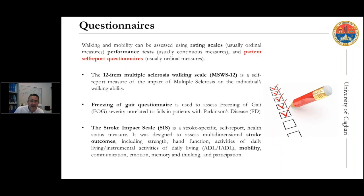It is also important to have information about the perception of the impact of the disease on gait. For multiple sclerosis, the MSWS-12 is very widely used — a self-report measure of the impact of MS on individual walking ability. For Parkinson's you can use the FOG questionnaire, for stroke the Stroke Impact Scale. There are questionnaires specific to a certain disease and others that are more general.